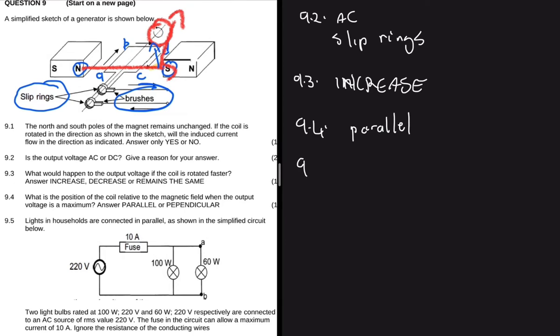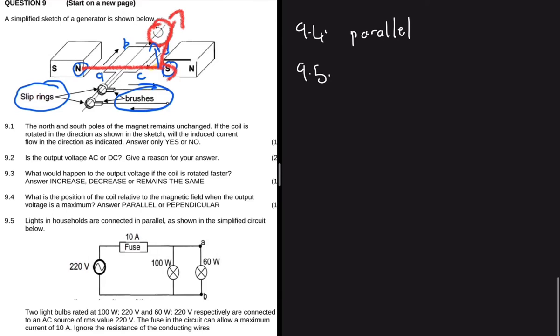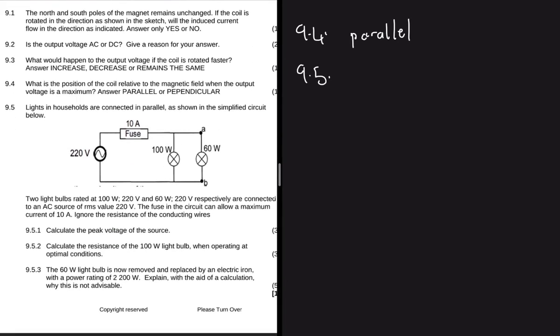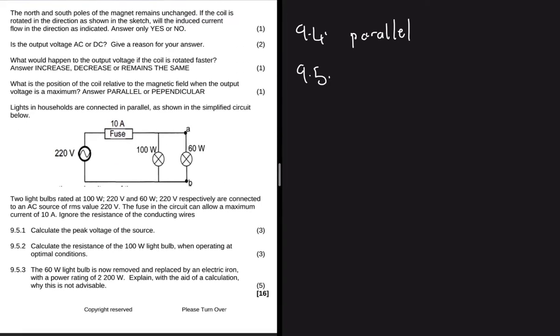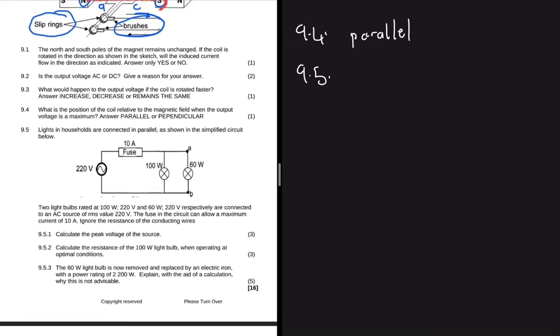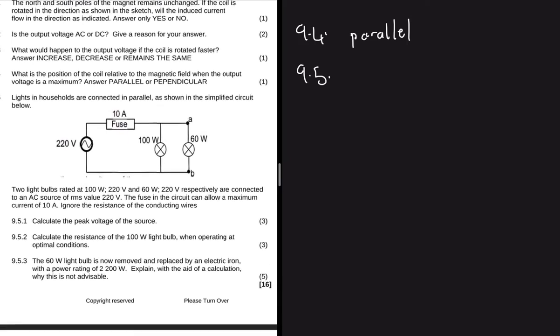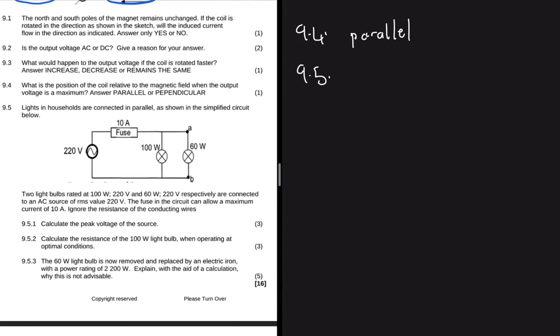And then we can go to 9.5 which I've been waiting for this entire time. We are using electrodynamics and electric circuits at the same time. Here we're told that lights in a household are connected in parallel as shown in the simplified circuit below. Lights or any other appliances, they work as resistors, that's just something I want you to note.